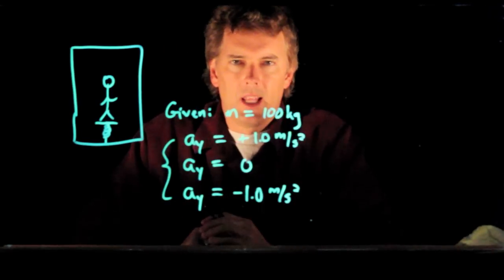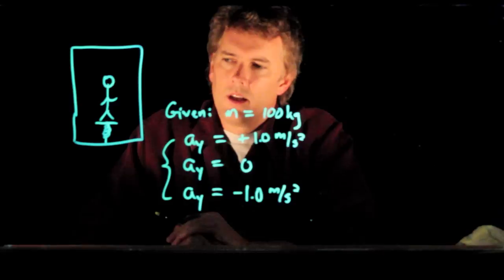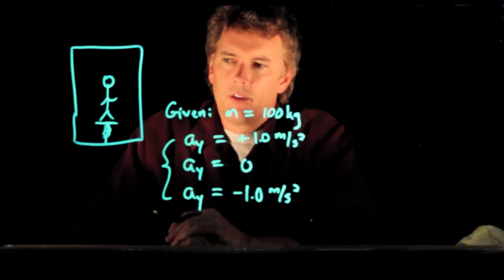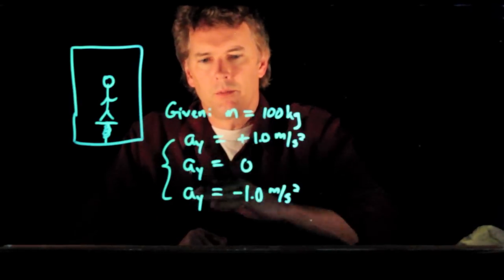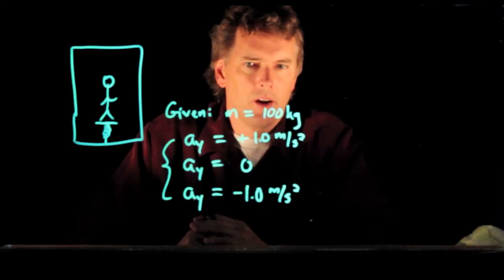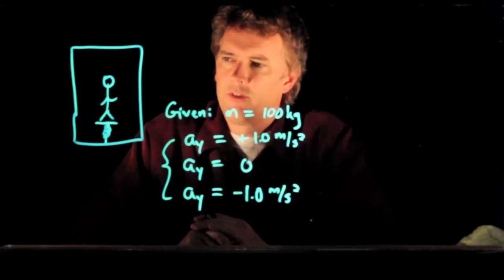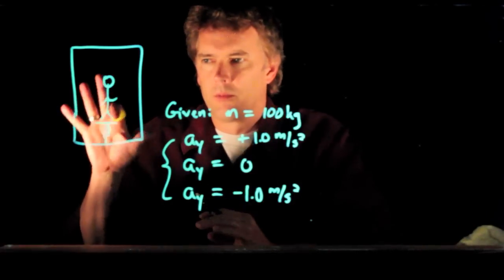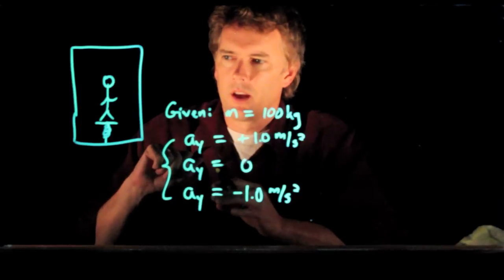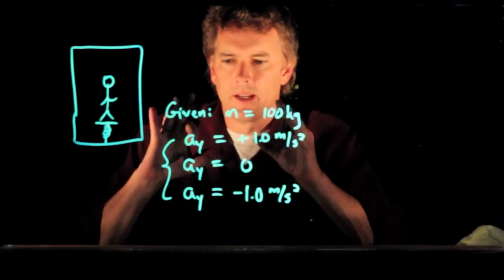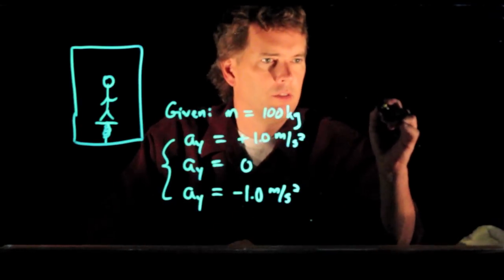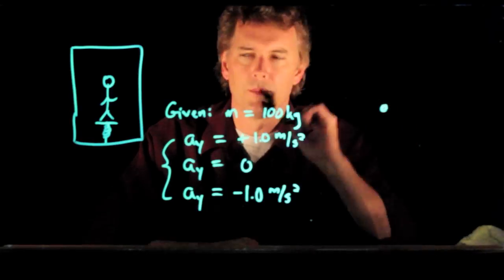And then let's analyze your weight as the elevator accelerates, when it's moving at constant velocity, and when it's decelerating. So how do we do that? Well, first thing we do is we draw a picture. We got the picture. Second thing is we draw a free body diagram and we write down all our givens. So we have the givens. Let's draw the free body diagram.